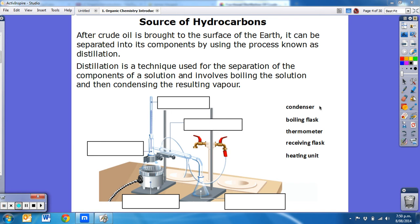So where do we get hydrocarbons from? Hydrocarbons come from crude oil. Once the crude oil is brought up from the ground, it is separated into components by a process called distillation.